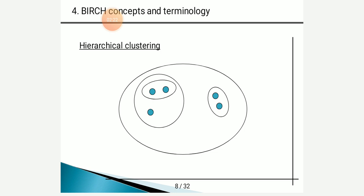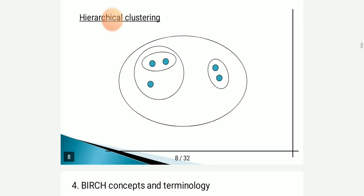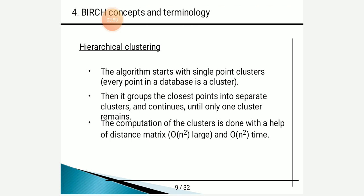Next is hierarchical clustering. We already know the concept: first we have two data points, they are merged together to form cluster 1, then data point 3 is merged to form cluster 2. On the right, two data points close to each other form cluster 3, then clusters 2 and 3 merge to form cluster 4. This algorithm starts with each point as a single cluster, then groups the closest points into separate clusters, continuing until we get a single cluster. The complexity of hierarchical clustering is O(n²).